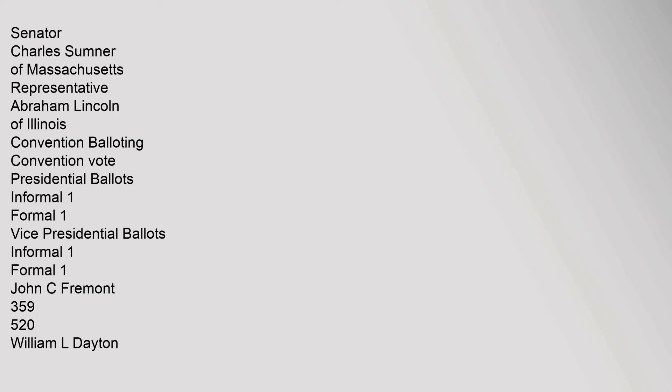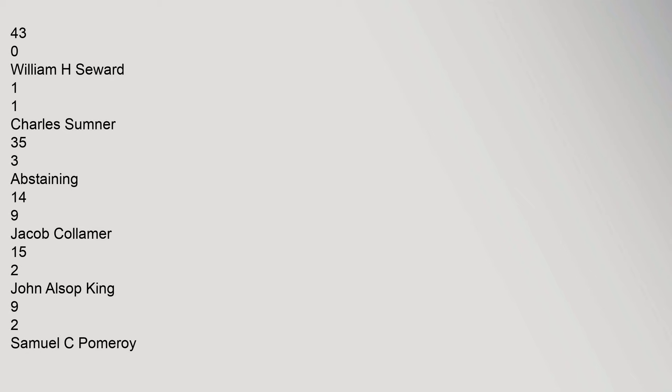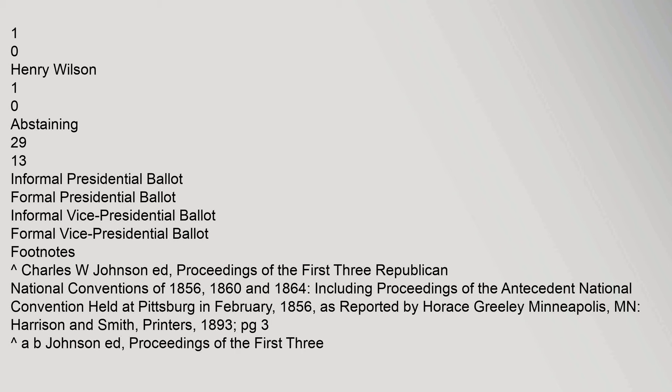Convention balloting results: In the presidential ballots (informal and formal), John C. Fremont received 359 and 520 votes; John McLean received 190 and 37; Abraham Lincoln received 110 and 20; Charles Sumner received 2 and 0; Nathaniel P. Banks received 46 and 6; David Wilmot received 43 and 0; William H. Seward received 1 and 1. For vice president, William L. Dayton received 253 and 523 votes, with various other candidates receiving smaller totals.